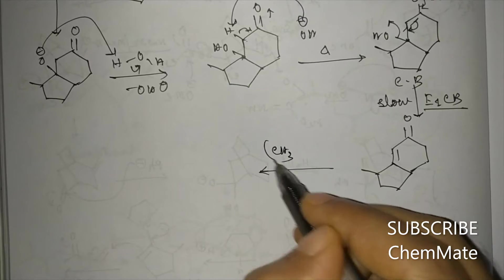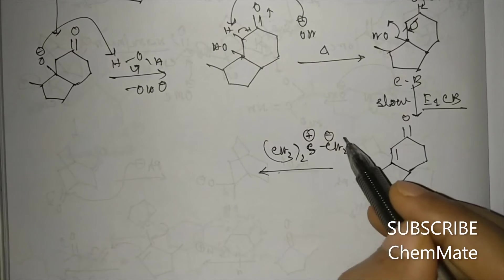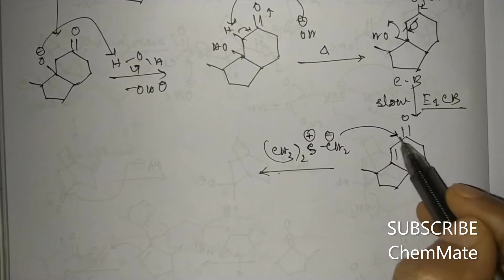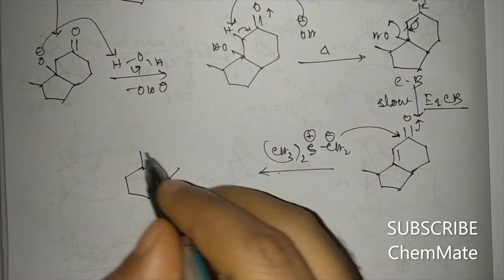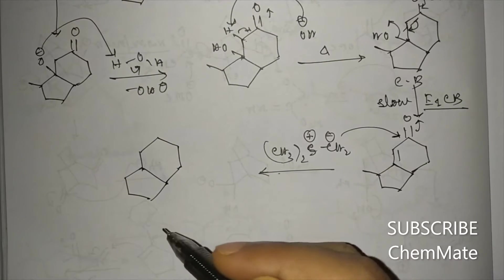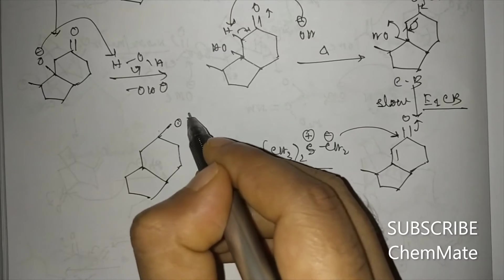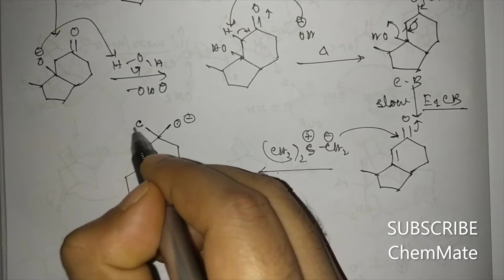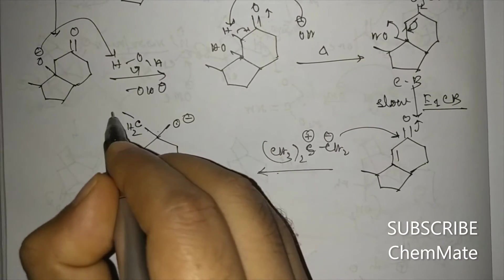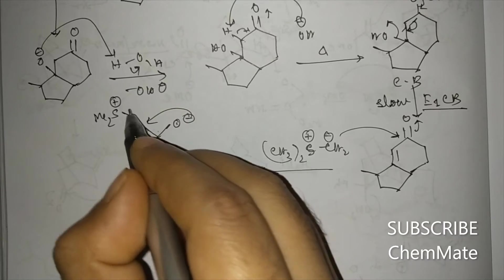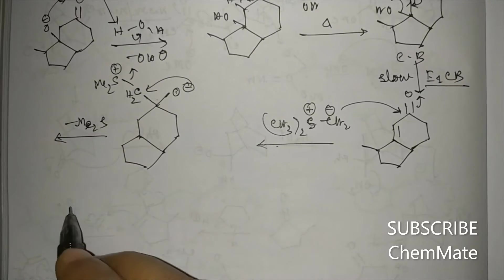The sulfonium ylide mainly attacks the carbonyl double bond — that is the electrophilic center. I have made a separate video on chemoselectivity of sulfur ylides you can visit. The ylide attacks here, Me2S leaves, and an epoxide ring is formed.